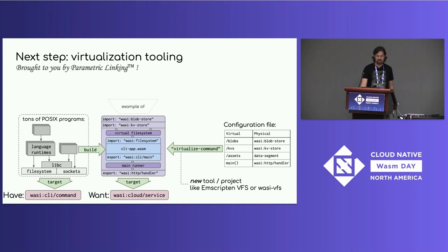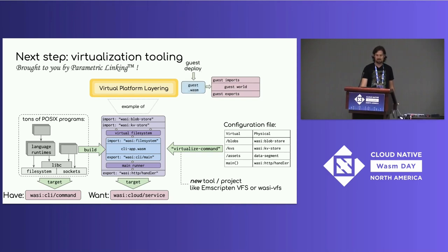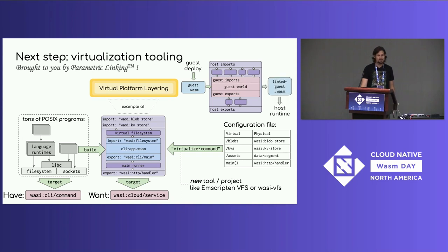This is an example of a more general pattern called virtual platform layering: you define a guest world exposed to your customers, who deploy components targeting it, and separately a host world with a totally different set of imports. You implement the guest world in terms of the host world and link it all together with parametric linking, so the host runtime only needs to know about the host world. This reduces the size of the trusted computing base and decouples the guest world from the host world. Even wilder: the host world itself could be a guest world of some lower platform layer — which you see in large enterprises with separate application and platform teams, or companies building platforms layered on other companies' platforms.